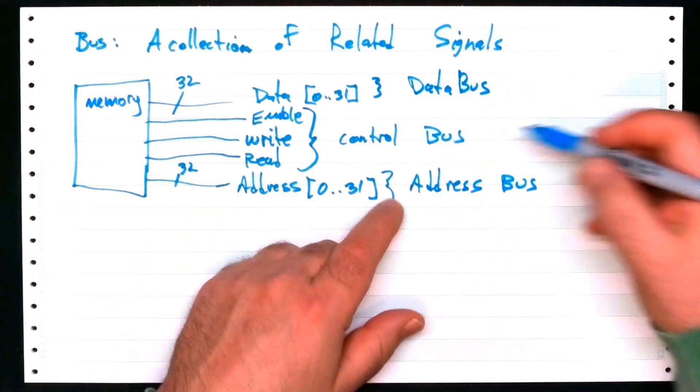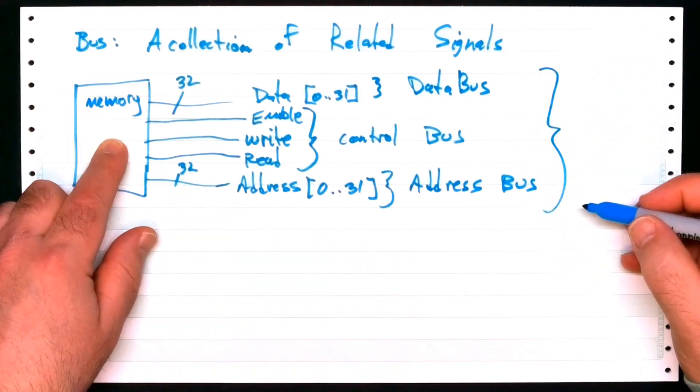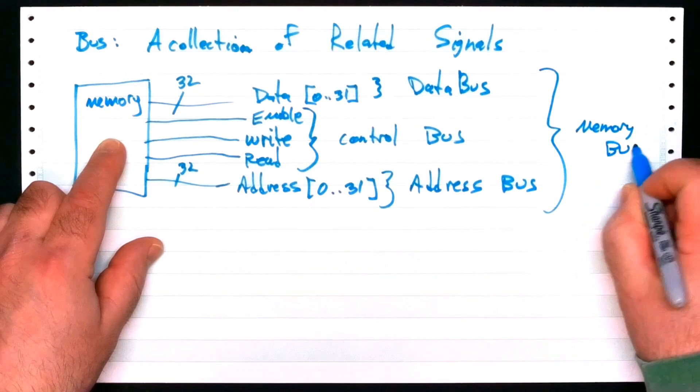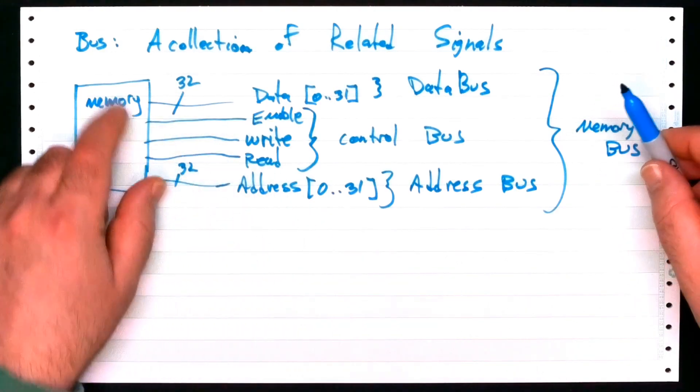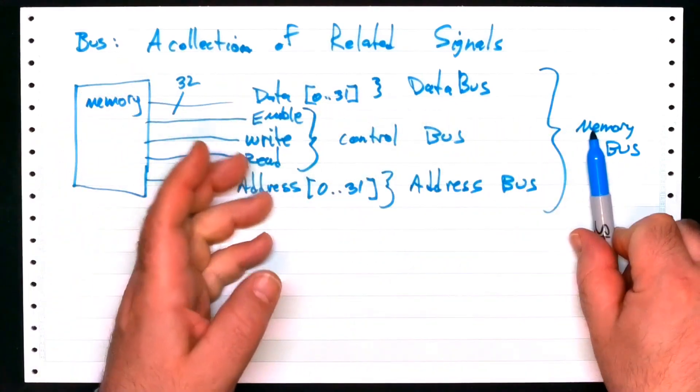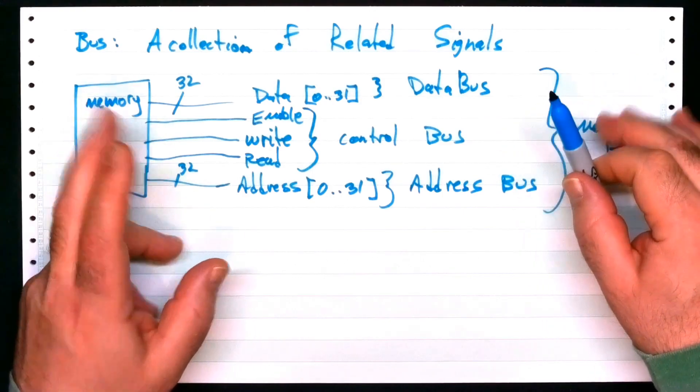Now, we can collect all three of these together if we want to. We can call this a memory bus. So, what's the point of all this? The point is, this is a general term. It requires context to understand what somebody's talking about. You don't just talk about the bus.